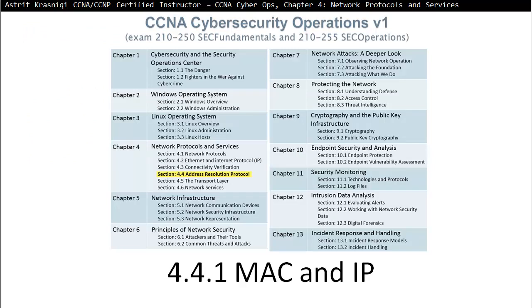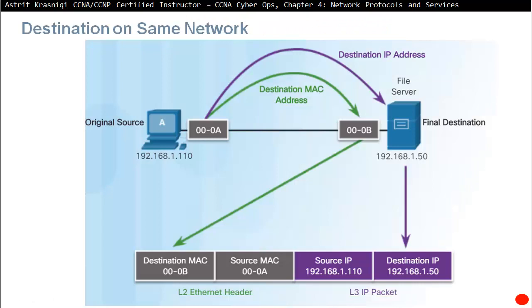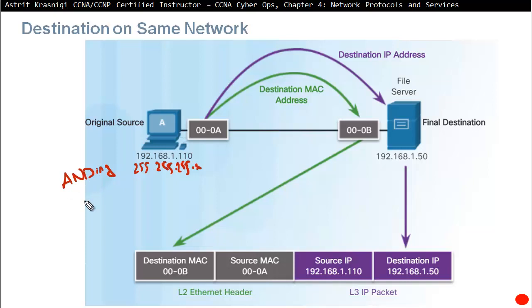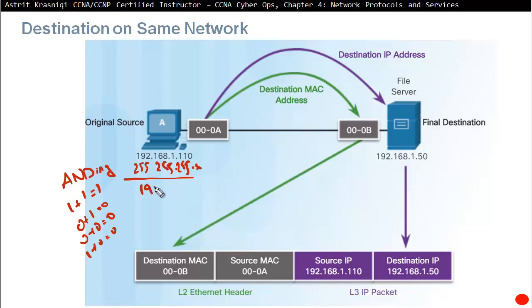Section 4.4.1: MAC and IP — Destination on the same network. If we want to communicate from one PC to another, the PC finds out its own network address using its subnet mask. For example with 255.255.255.0, it uses an AND operation — one AND one equals one, everything else is zero. Running through that, it finds out its network ID is 192.168.1.0.